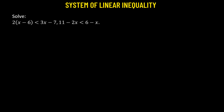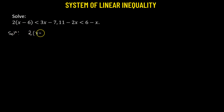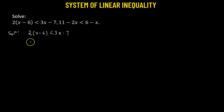Let's solve the following system of linear inequalities. We'll begin by considering the first equation: 2 times x minus 6, less than 3x minus 7. Multiplying 2 into x minus 6 gives us 2x minus 12 less than 3x minus 7.